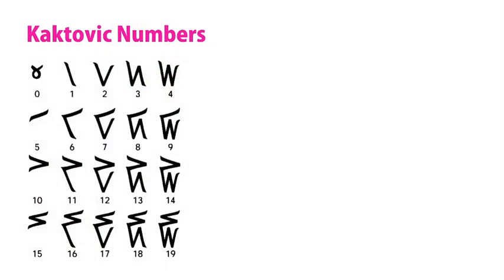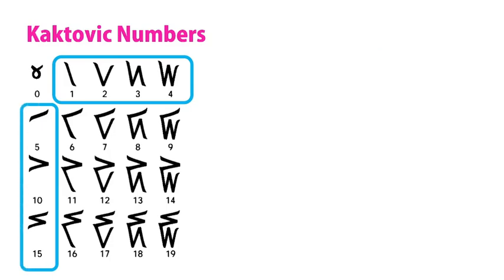Similar to Mayan numbers, each digit is represented by single strokes, with vertical strokes representing the numbers 1 through 4 and horizontal strokes representing sets of 5. This means that 1 through 19 can be represented by a single glyph.